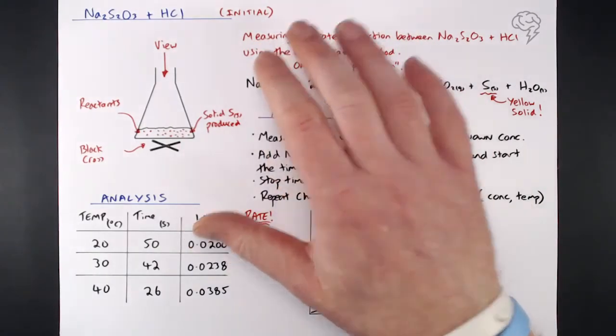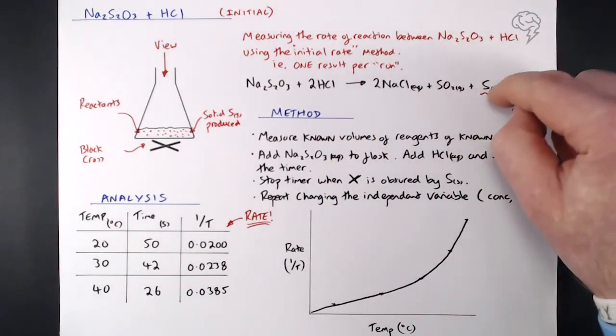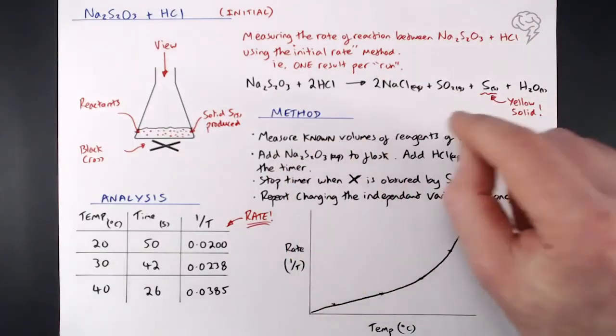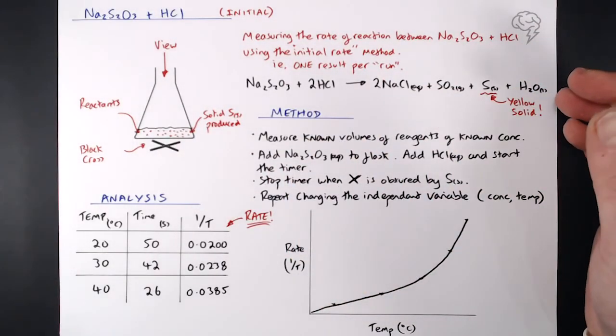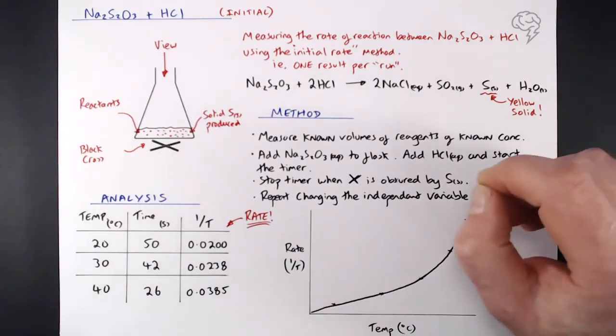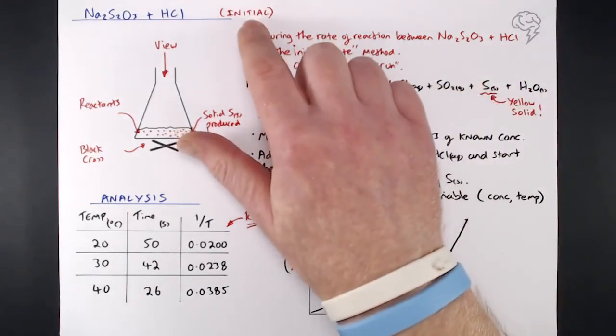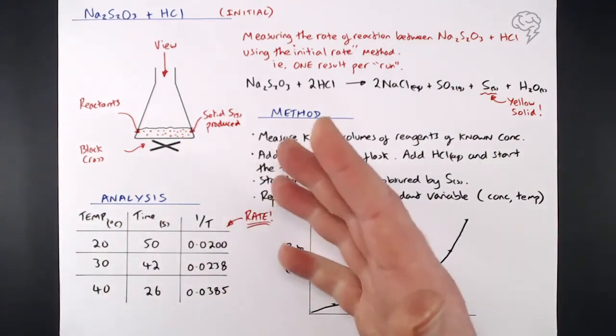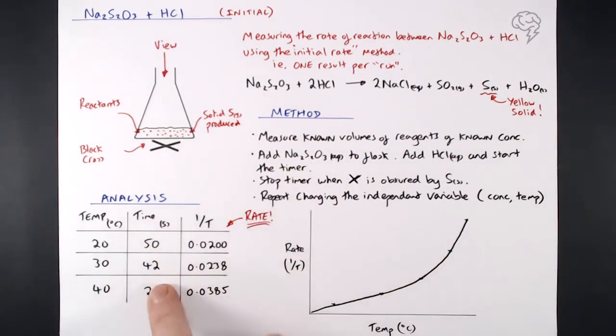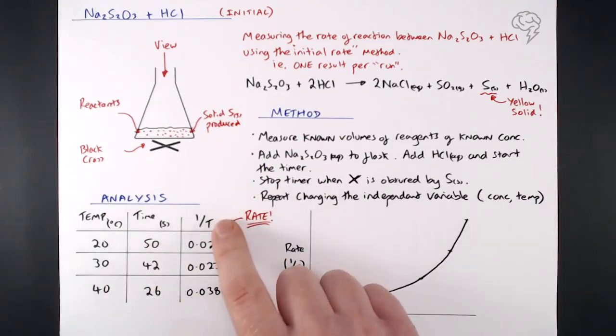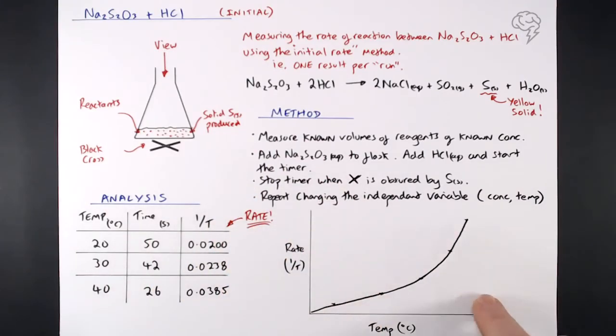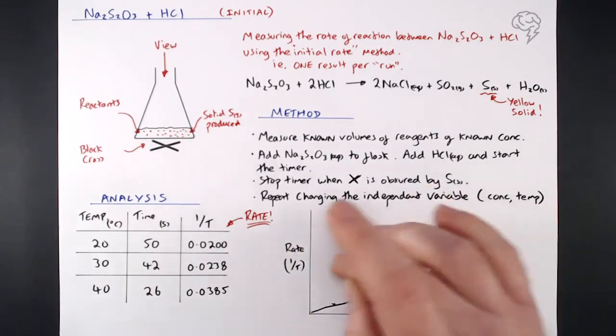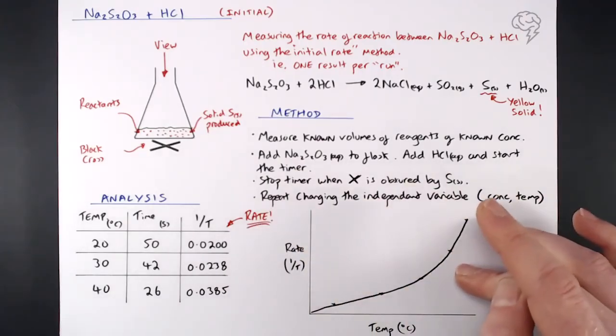This one's very specific to this reaction because we're producing sulfur. So we're measuring the initial rate. We're not continuously measuring the production of sulfur over time. We're literally like, how long does it take to get to a certain point? So that's why it's known as an initial rate method. We follow that method. We get our results here, repeating as necessary, finding our averages. And then what we do is 1 over T, and that's our rate. We plot that graph at different temperatures. And no gradient needed here. We can just read to find the rate of reaction from this graph.